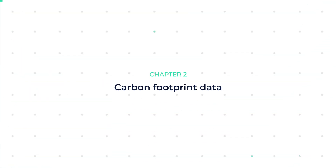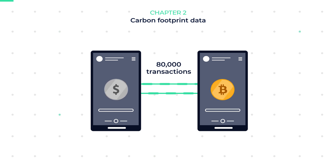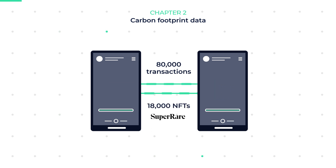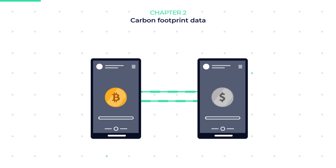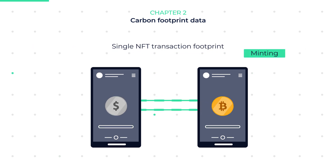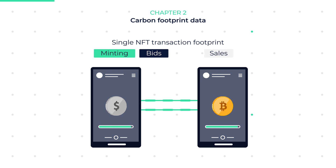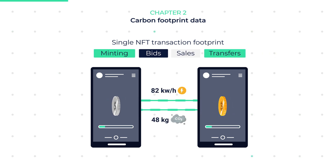Chapter 2: Carbon Footprint Data. 80,000 transactions were examined, involving 18,000 NFTs on the SuperRare NFT marketplace, which is one of the more popular NFT marketplaces at this moment. The average footprint of a single transaction involving an NFT — including minting, bids, sales, and transfers — is 82 kWh, with outputs of 48 kilograms of carbon.